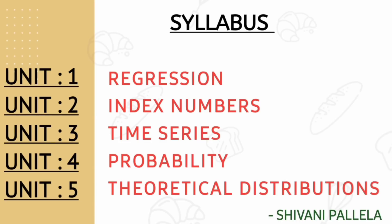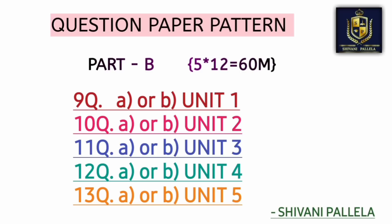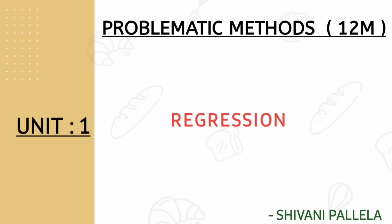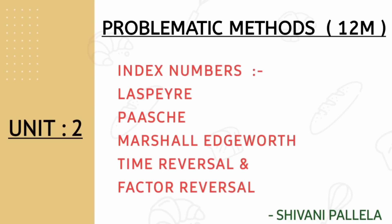In Part A there are 20 marks including theory and problematic questions. In Part B you will have internal choice and each question carries 12 marks. From unit number one, the problematic method is Regression — that is the only 12 marks compulsory question you are having.